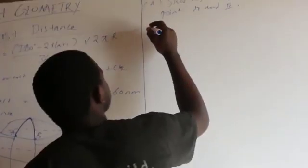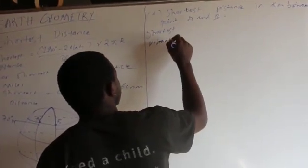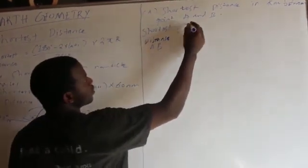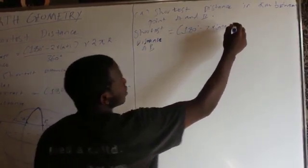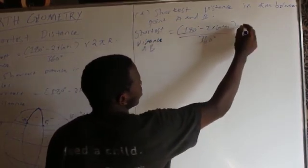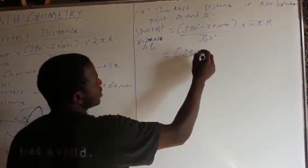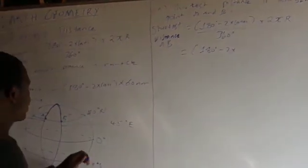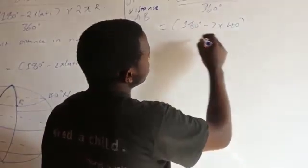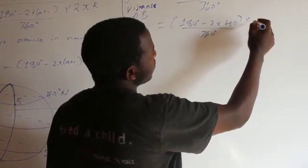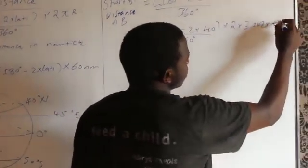So I'm going to write that formula. Shortest distance between A and B is equal to 180 degrees minus 2 multiplied by the latitude, over 360, multiplied by 2πr. So I'll have 180 degrees minus 2 multiplied by 40, over 360, multiplied by 2 multiplied by π (3.142), multiplied by the radius in kilometers which is 6370.